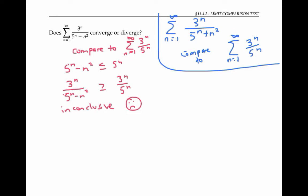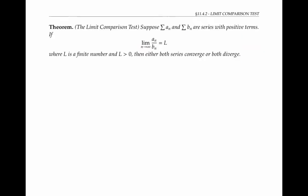The limit comparison test gives us one way around this. It says the following: suppose that the sum of a_n and the sum of b_n are series with positive terms. If the limit as n goes to infinity of the ratio a_n over b_n equals a number L, where L is a finite number bigger than zero, then either both series converge or both diverge — they have the same convergence status.